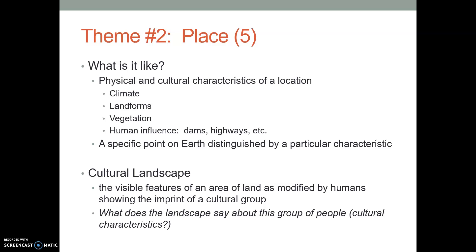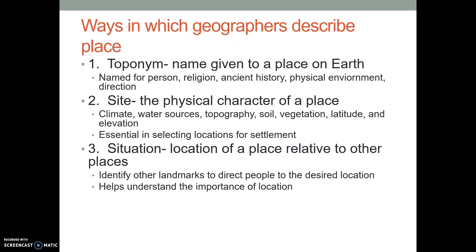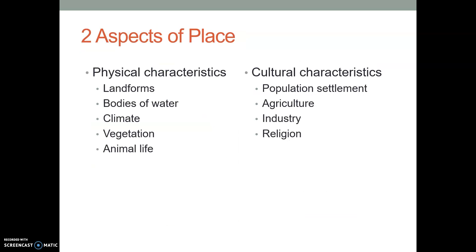A physical characteristic is things that are naturally occurring. When we describe a place, you can describe it physically and culturally. Physical characteristics are naturally occurring features: landforms like mountains, hills, or valleys; bodies of water like lakes, oceans, streams, and rivers; the climate, which we don't control; vegetation — what naturally grows, what types of trees there are; and animal life. These are physical characteristics that humans really have very little control over, and when you describe those, you're not describing the people.